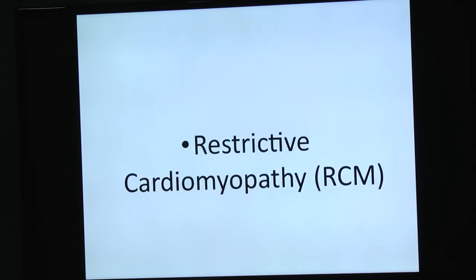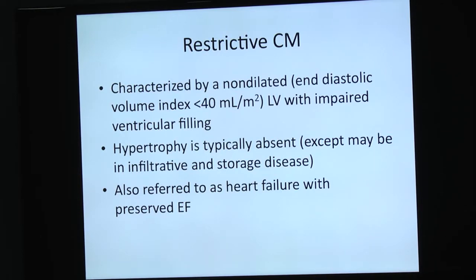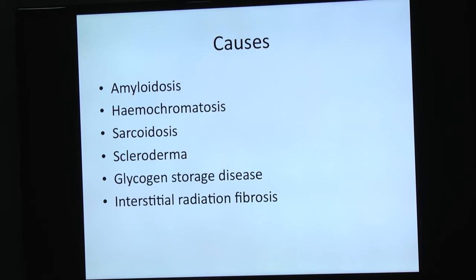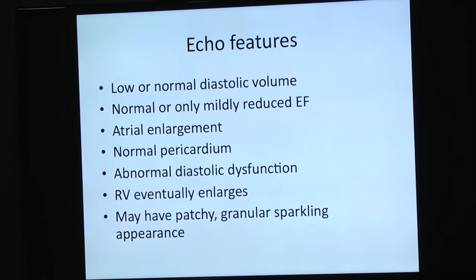Restrictive cardiomyopathy is characterized by a non-dilated LV with impaired ventricular filling. Hypertrophy is typically absent, except in infiltrative and storage diseases like amyloidosis. Also referred to as heart failure with preserved ejection fraction. Causes include amyloidosis, hemochromatosis, sarcoidosis, and scleroderma. Echo features: low or normal diastolic volume, normal or only mildly reduced ejection fraction, atrial or biatrial enlargement, normal pericardium. People can confuse this with constrictive pericarditis. Patchy granular sparkling appearance generally suggests amyloidosis.